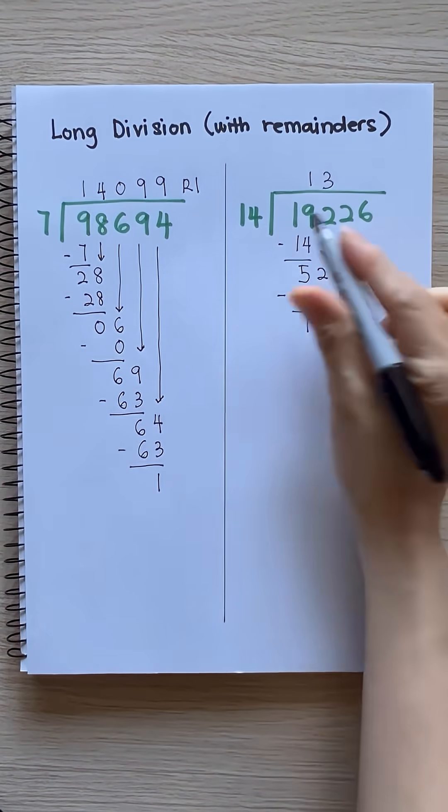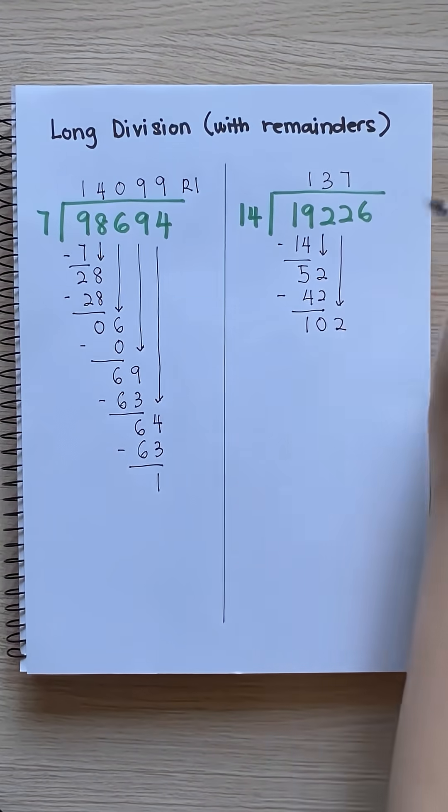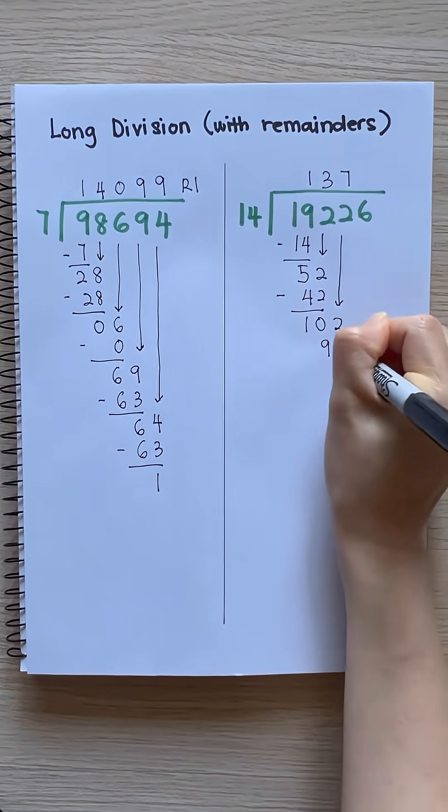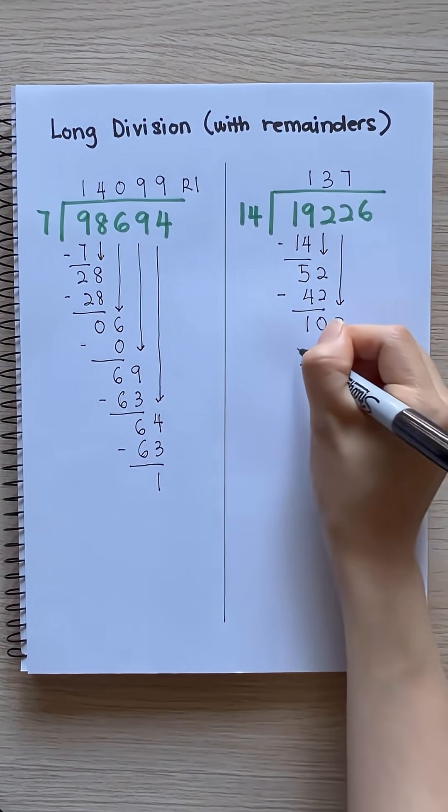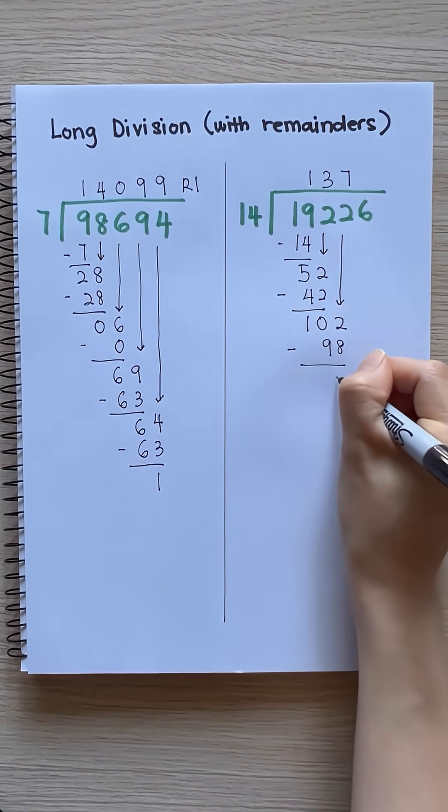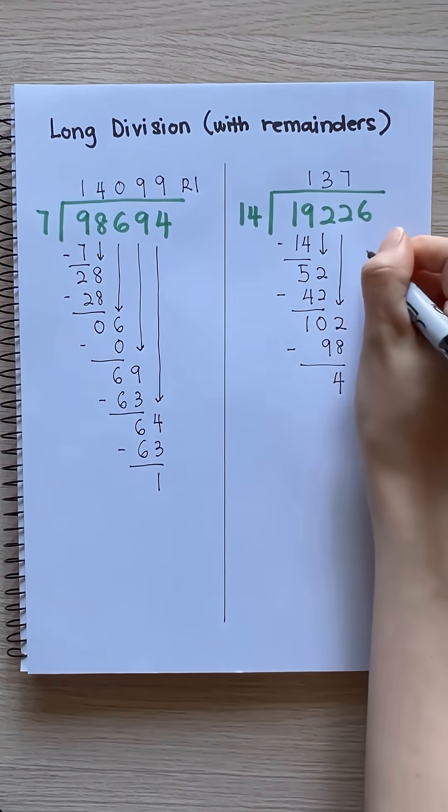14 times 7 equals 98. 102 minus 98 equals 4. Bring down 6.